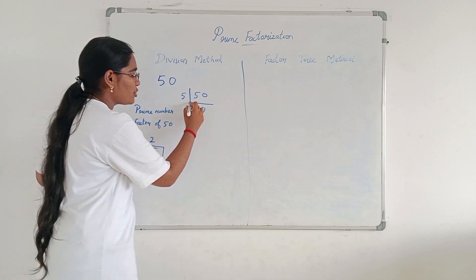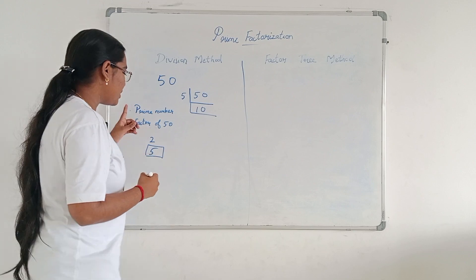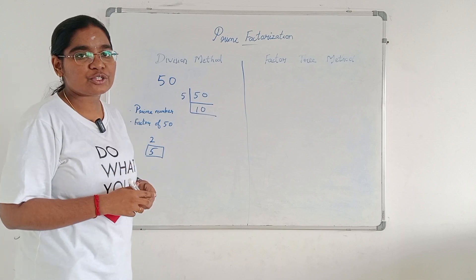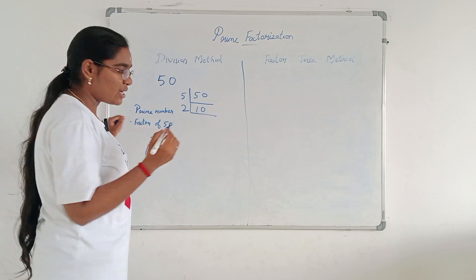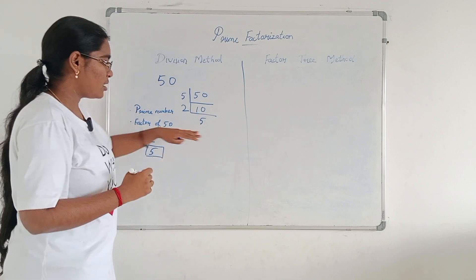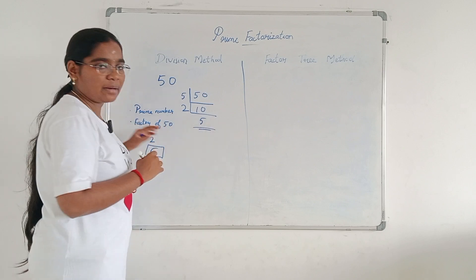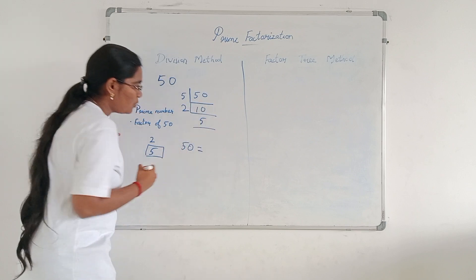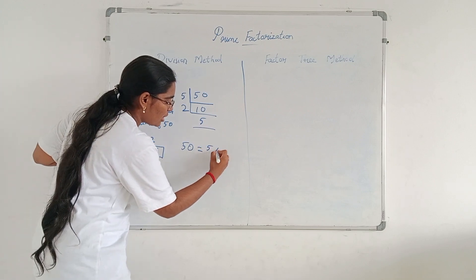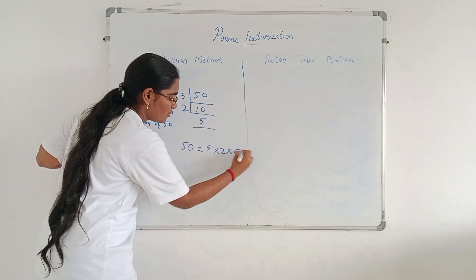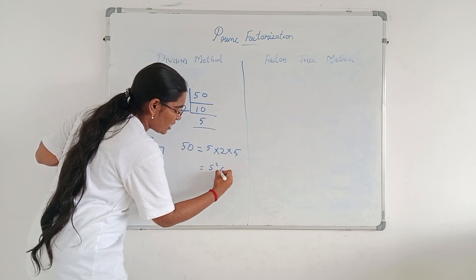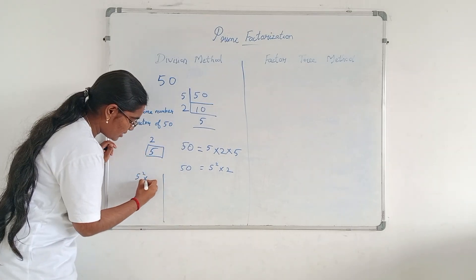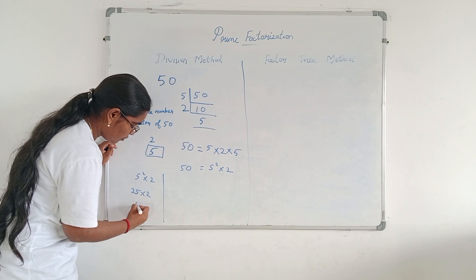Next, for 10, you should choose a prime number that is a factor of 10. You can choose 2 because in the 2 table, 10 comes 5 times. At last, 5 is a prime number, so you can stop here. You should write 50 equal to 5 into 2 into 5. So, 5 appears twice — that is 5 squared into 2. This is the final answer. Verify: 5 squared is 25, and 25 into 2 is 50.